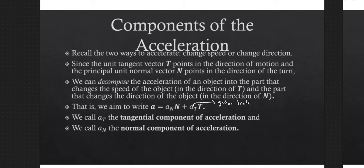Hitting the gas would make a_T positive — it would increase my speed — and hitting the brake would make it negative and decrease my speed. But there are other ways to accelerate, and that is by turning the wheel. So a_N is how much I'm turning the wheel — the acceleration that comes from turning. What we're really talking about is breaking down the acceleration of an object such as a car into how much is going into turning and how much is going into changing the speed.